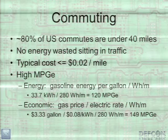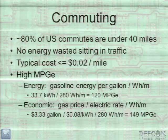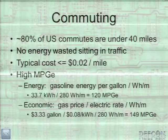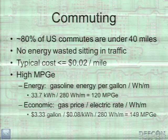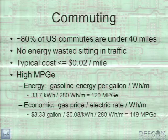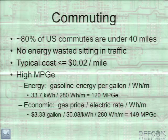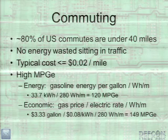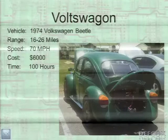My favorite use is commuting. 80% of U.S. commutes are under 40 miles, so for the vast majority of people, a pretty cheap EV can take care of things. You're not using any power when sitting at a light or waiting for a train — stop-and-go traffic uses nothing. Compared to gas, it costs less than two cents per mile versus 10 to 30 cents for a gas vehicle. You also have very high mileage measured in MPGE. There are two proper ways to calculate MPGE: the empirical energy-equivalency method gives my car 120 MPGE, and comparing gas price to electricity price gives me 150, or over 200 compared to gas a month ago.